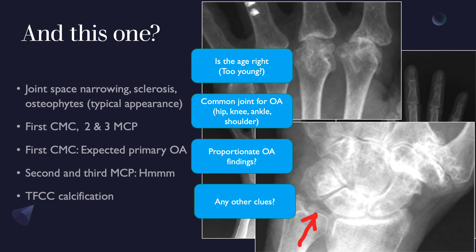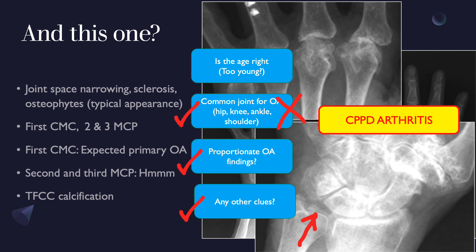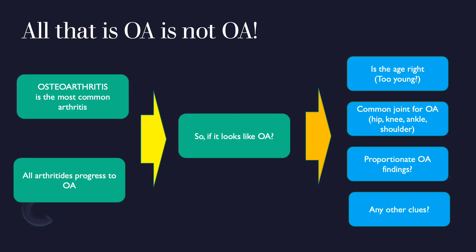Applying the algorithm: the MCP joints are absolutely not a common OA location; the basal joint of the thumb is. Changes are proportionate for OA, but the additional clues — calcification of the triangular fibrocartilage and involvement of the second and third MCP joints — form a pattern that is classic for CPPD arthritis. You can be very confident this is CPPD-related arthritis.